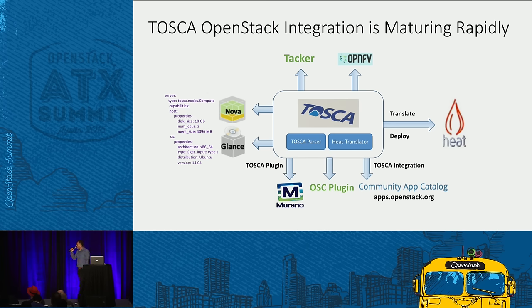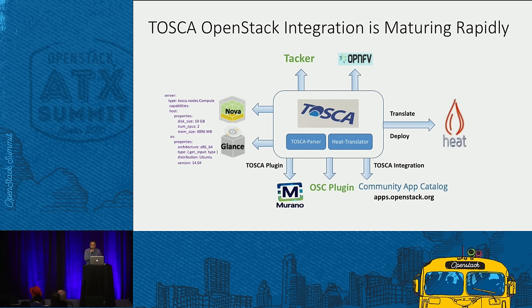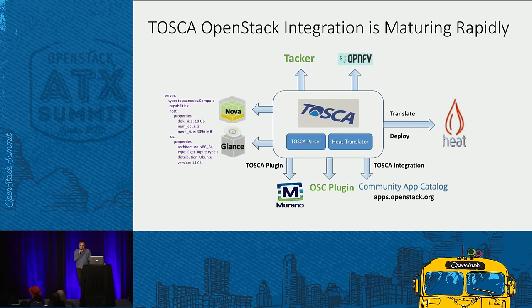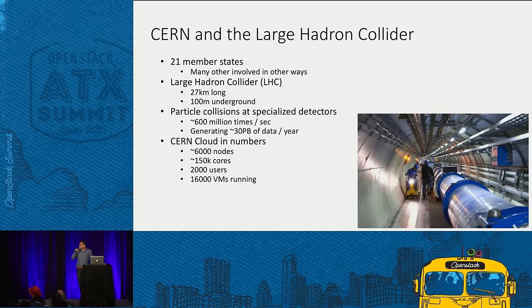On the adoption side, we now have a Murano Tacker plugin, an OpenStack client plugin, and a few weeks back we completed integration with the Community App Catalog — all TOSCA templates can be browsed at apps.openstack.org. On the TOSCA adoption side, our two important stakeholders are Tacker and OpenPlatform NFV (OPNFV) — both using TOSCA Parser and Heat Translator, with their developers also contributing to both projects. Our destination is Heat — we translate to HOT and we deploy with Heat.